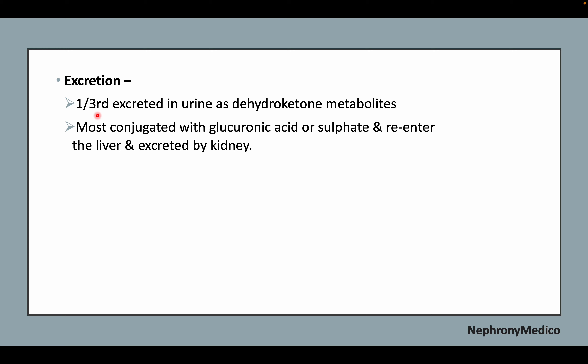Regarding excretion: one third is excreted in the urine as dihydroketosteroid metabolites. Most are conjugated with glucuronic acid or sulfate, re-enter the liver, and are excreted by the kidney.